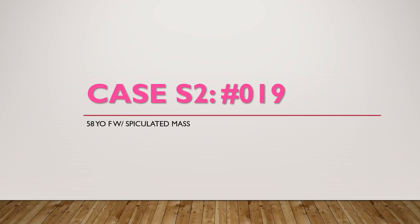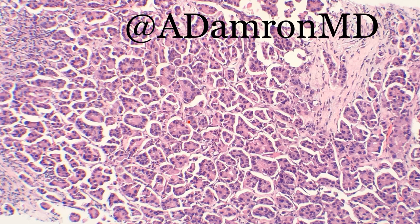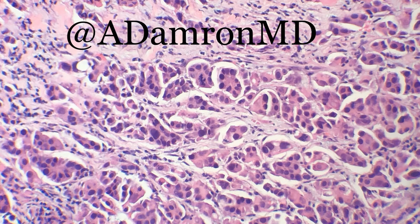Moving on to the next case: a 58-year-old female with a spiculated mass. This is a very unique case that you need to be aware of and able to recognize. You have clearly an infiltrative lesion — there's no lobulocentric pattern and no normal breast architecture on this core. At higher power, you see these micropapillary structures with very evident clearing around the micropapillary clusters — that is a very unique feature about this particular entity. These lesions are typically higher grade, with atypical mitoses. Importantly, these micropapillary structures don't actually have a fibrovascular core — it looks papillary, micropapillary, but there is no fibrovascular core. They're typically mitotically active, with very irregular nuclei. Lymphatic invasion is very common in this particular entity.